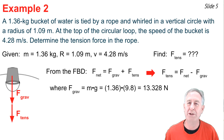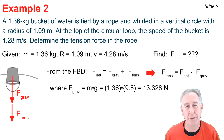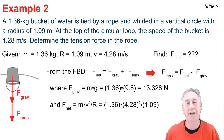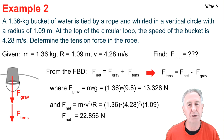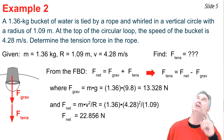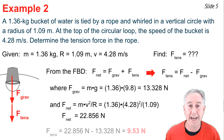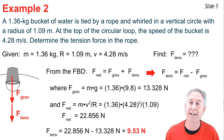F_grav = mg, so I multiply mass times 9.8 N/kg. F_net = mv² / r, which gives approximately 22.856 newtons. Then F_tension = F_net − F_grav, which works out to 9.53 newtons.